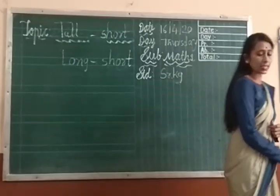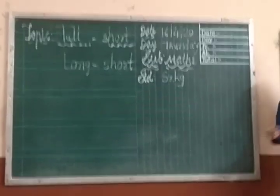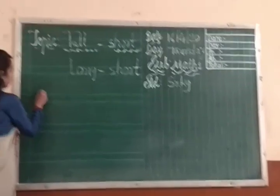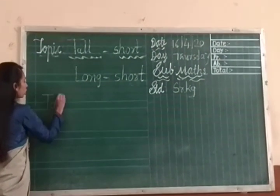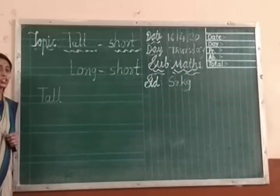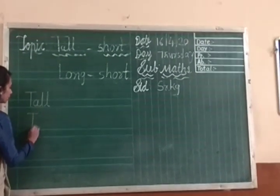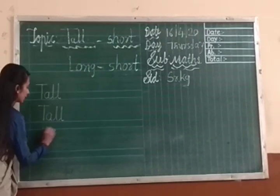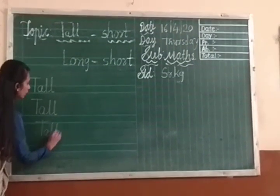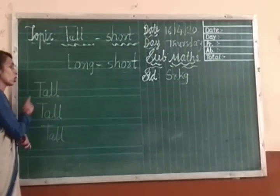First, senior KG students, read the spelling properly. Speak with me: T-A-L-L, tall. T-A-L-L, tall. T-A-L-L, tall. What is the spelling of tall? T-A-L-L. Tall.